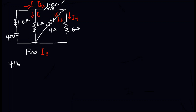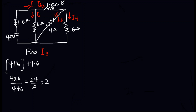This parallel combination will then be in series with the 1.6 ohms. So after solving the parallel connection and adding the 1.6 ohms, you get: 4 times 6 divided by 4 plus 6, which is 24 over 10, giving 2.4 ohms. Then 2.4 plus 1.6 gives us a total of 4 ohms.